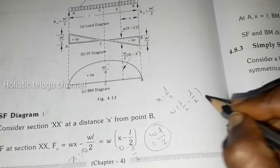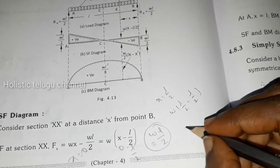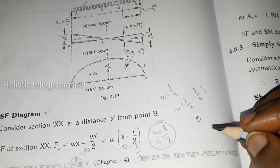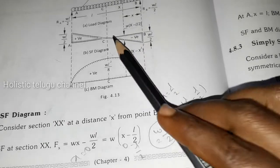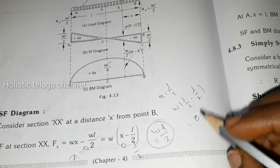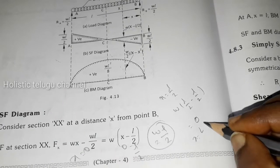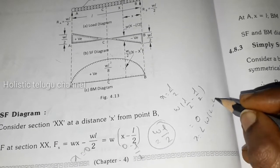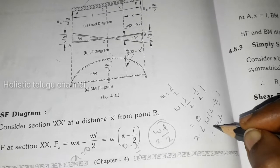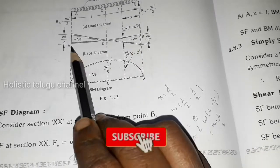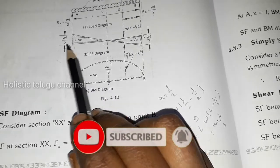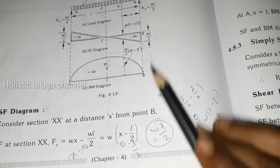So next, that is L by 2 minus L by 2, that is equal to 0. Points equal to 0. So next, when X equal to L, WL minus L by 2, that is equal to WL by 2, so plus. So plus, here in this line we get WL by 2.